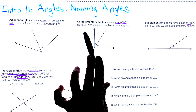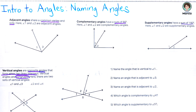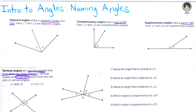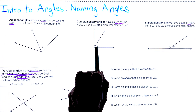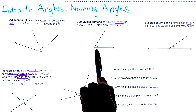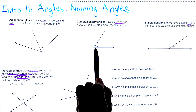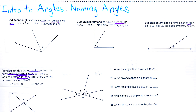For the second type, we have complementary angles — they will always have a sum of 90 degrees. Here is an example of a pair of complementary angles. Notice angle one and angle two equal 90 degrees, and we know that because of the perpendicular box — these lines meet at 90 degrees, so those are complementary.